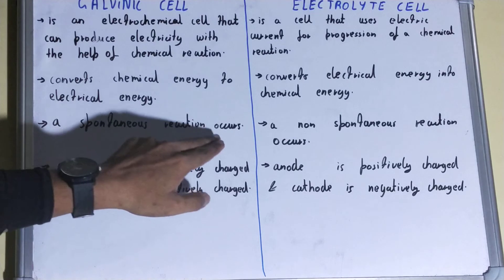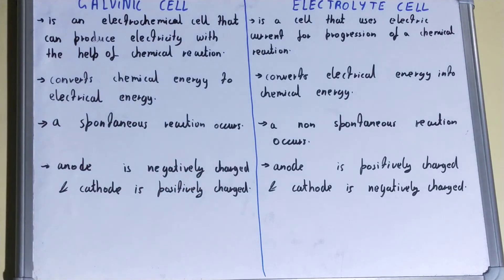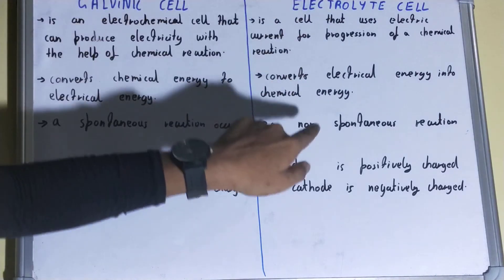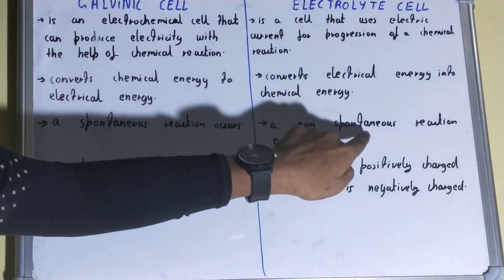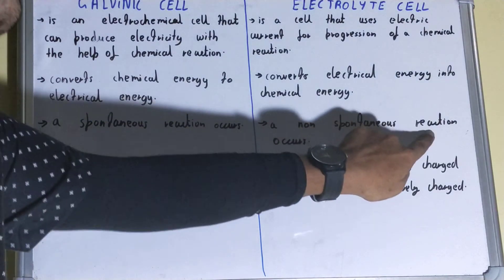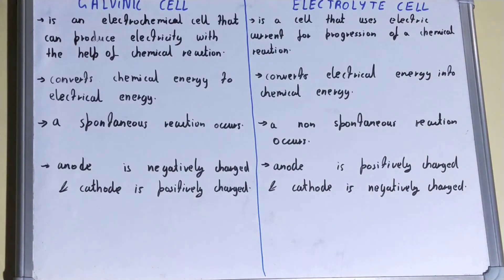In a galvanic cell, the reaction is spontaneous — it is a naturally occurring reaction that doesn't need an outside stimulus to start. In an electrolytic cell, the reaction is non-spontaneous, meaning it needs an external stimulus to initiate it.